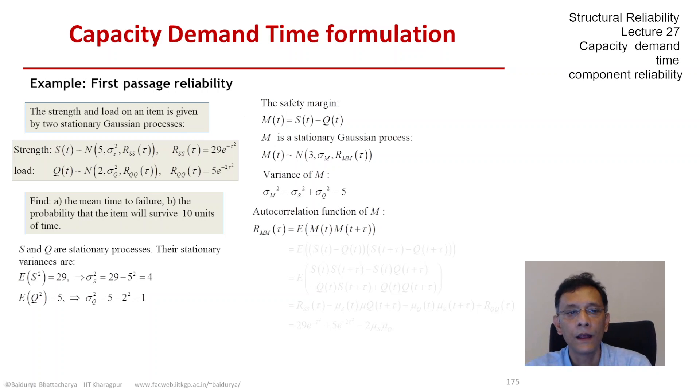Let us start from the basic definition. R_mm(tau) is E[M(t) times M(t+tau)], and let us now write that out, with M being S minus Q.